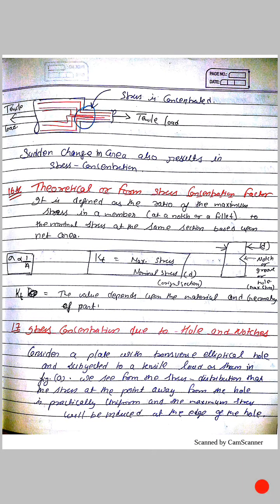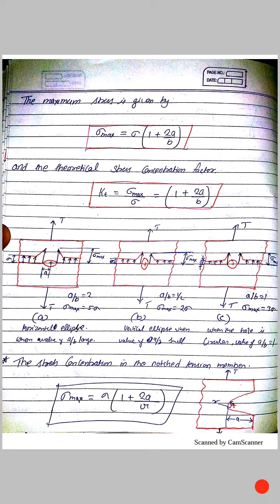Stress Concentration due to Holes and Notches: Consider a plate with a transverse elliptical hole subjected to a tensile load as shown in the figure. The stress at points away from the hole is practically uniform, and the maximum stress will be induced at the edge of the hole. The maximum stress is given by: sigma_max = sigma (1 + 2a/b), and the theoretical stress concentration factor Kt = sigma_max / sigma = 1 + 2a/b.